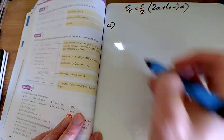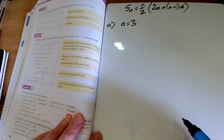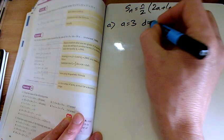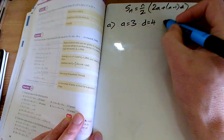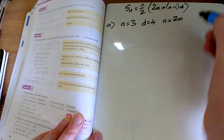For part a, you can see that the first term is 3, so a is 3. It goes 3, 7, 11, so d is going to be 4. And n, it tells you by the side there, is 20. So I've got 20 terms here.